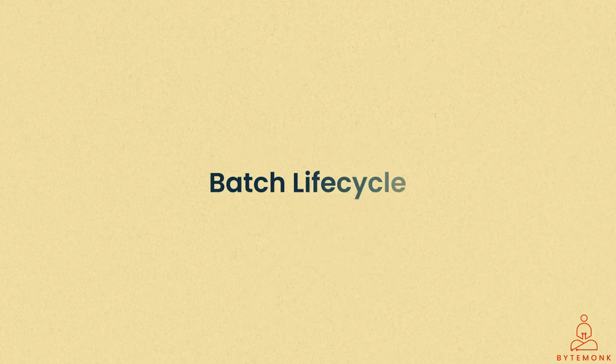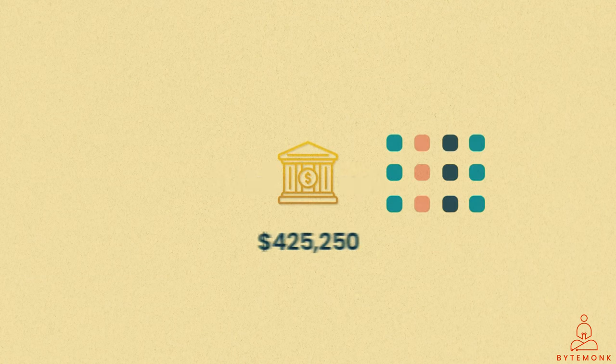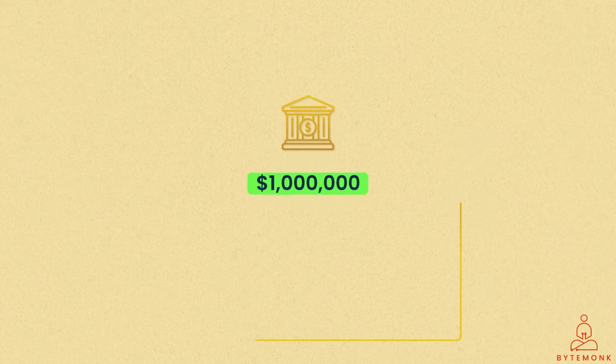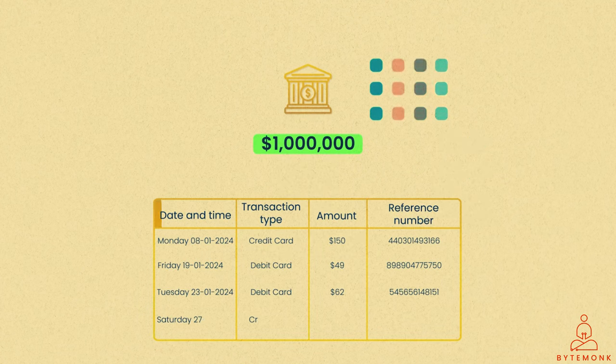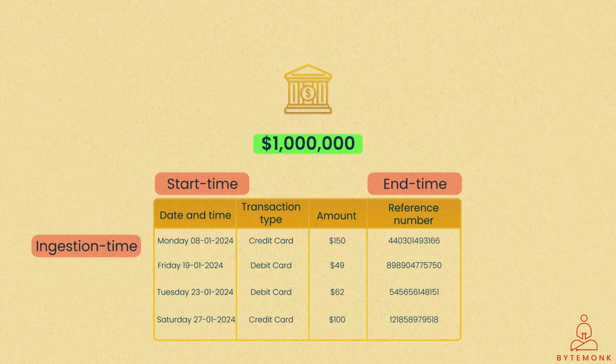Now, every batch process follows a life cycle, and understanding this life cycle is crucial for efficient processing. Let's revisit our example of the end-of-day payment transactions of a bank. While the list of transactions forms the core content of the batch, supplementary details such as the batch start and end times from a business perspective and the batch ingestion time from a technical perspective are equally essential. These additional pieces of information are particularly valuable during reprocessing.